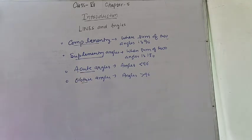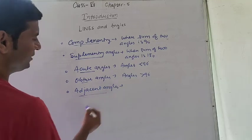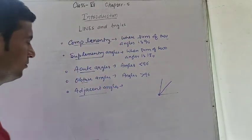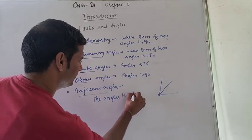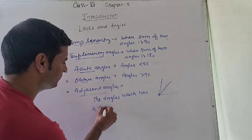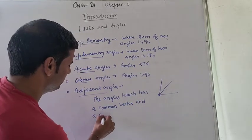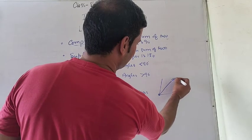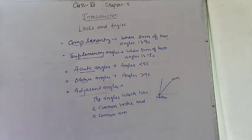Next are adjacent angles. Adjacent angles are the angles which have a common vertex and a common arm (also called edge or side). So these two angles A and B, which share a common vertex and a common arm, are known as adjacent angles.